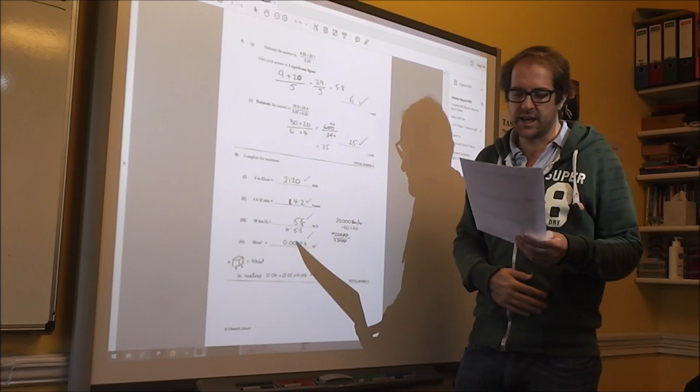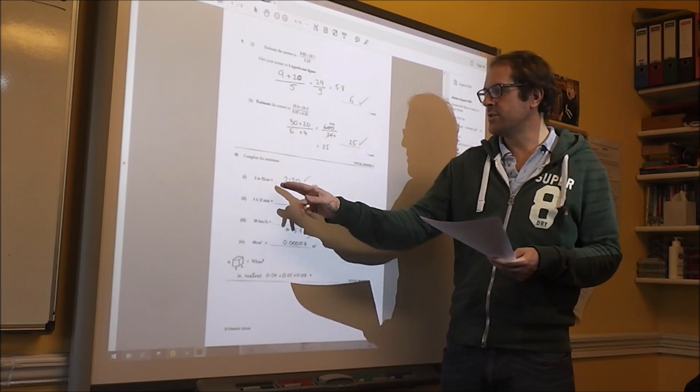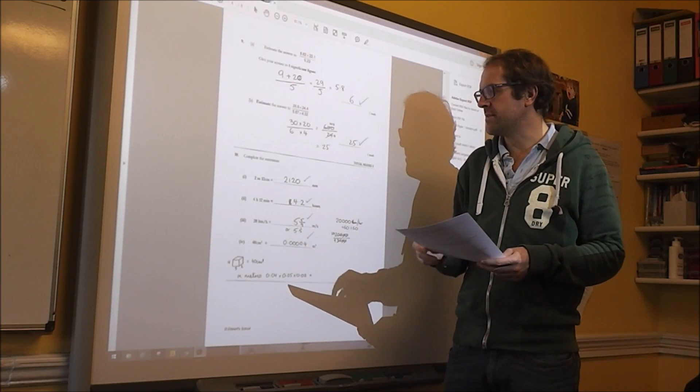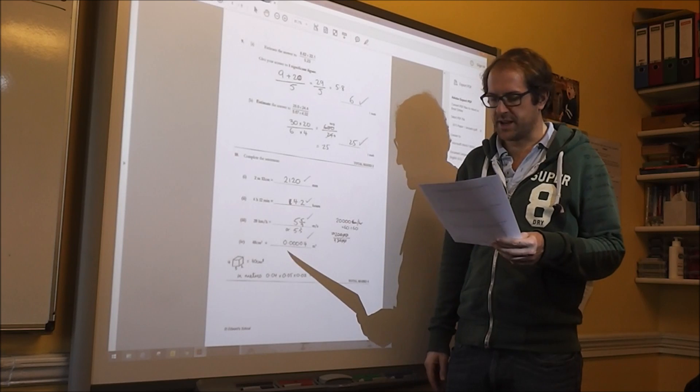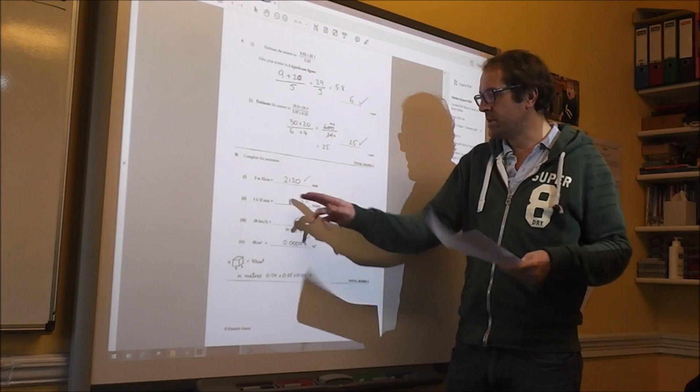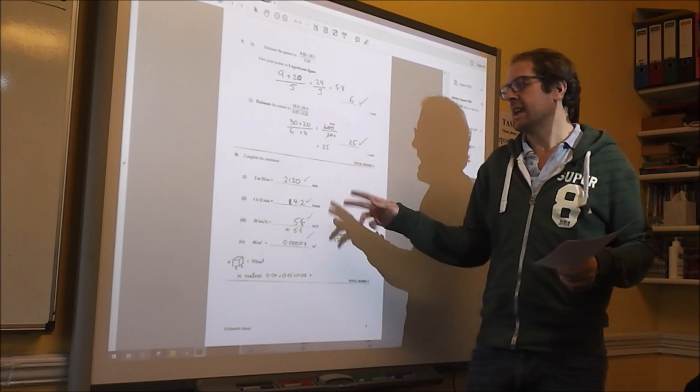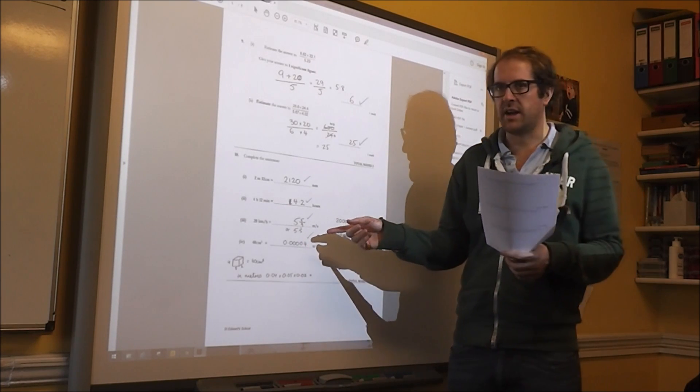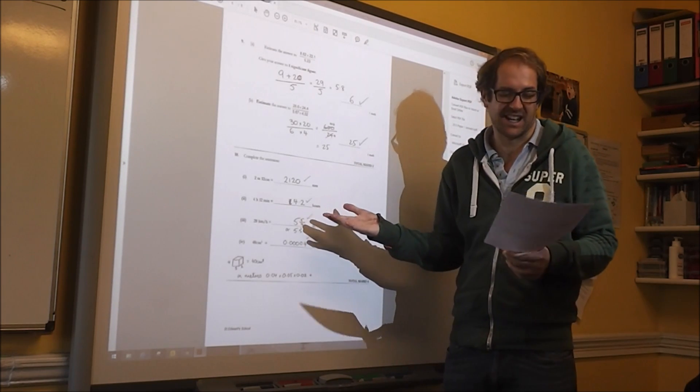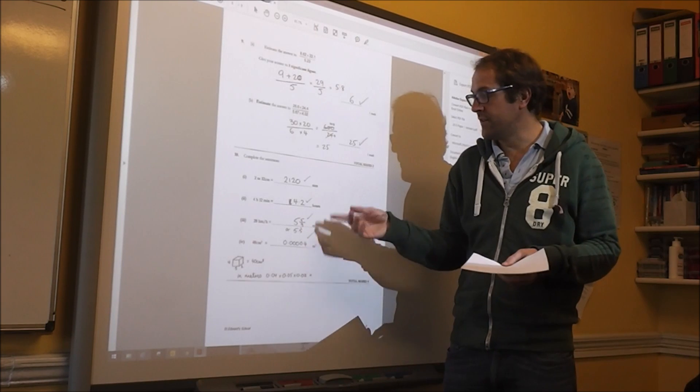Question 10 is about converting the units. 2m, 2m, 12cm is 2,120mm. 4 hours and 12 minutes is 4.2 hours. I guess they're looking for 4.2 rather than 4 hours and 1 fifth, but I think you could get away with that if you put 4 and a fifth.